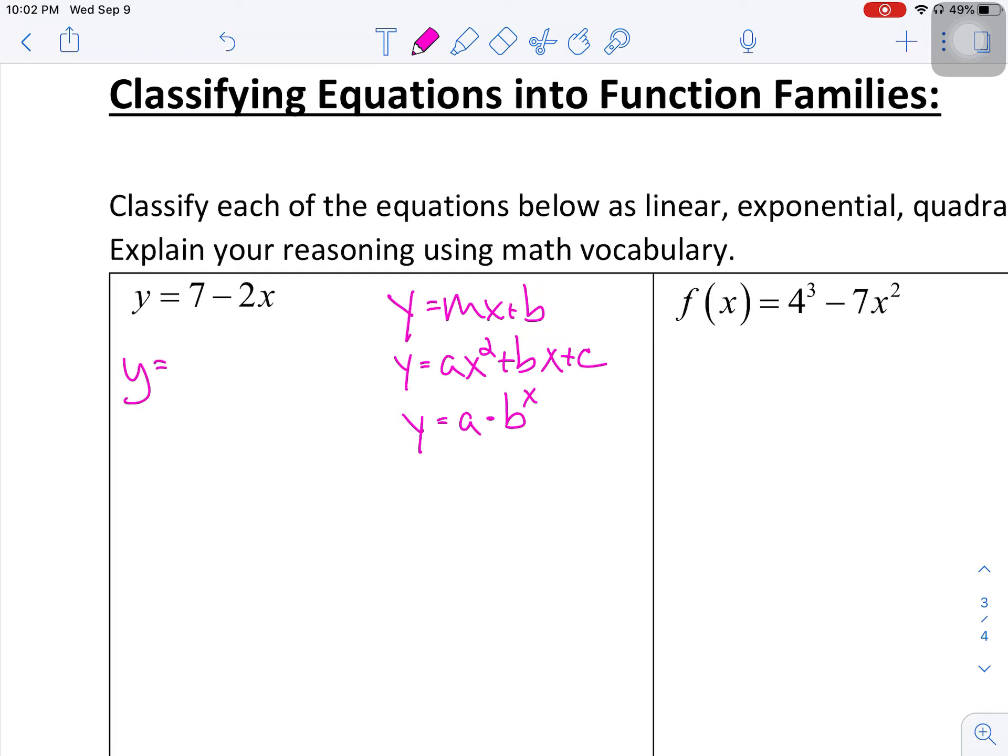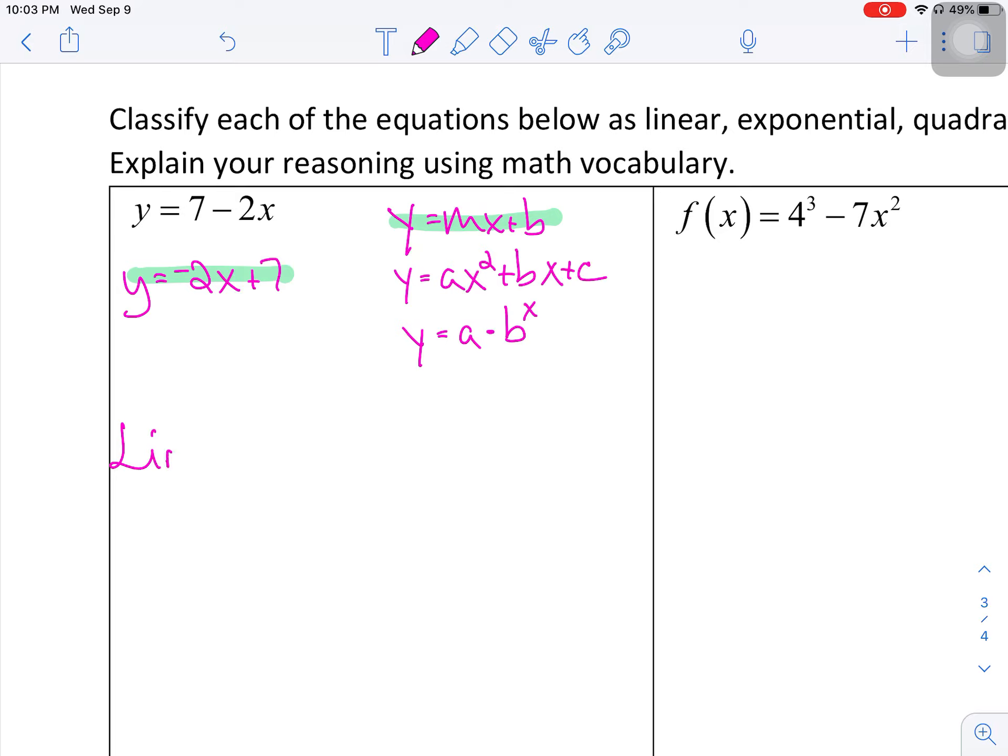So if I flip these two pieces, put the negative 2x first, and then the plus 7 second, this then matches that. So that tells me that I have a linear function. So linear function, it can be written in y equals mx plus b.